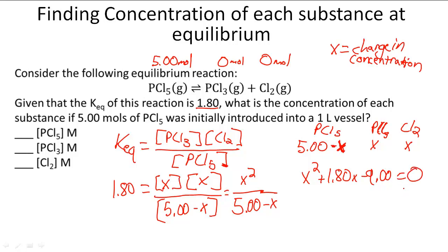We're going to solve this using the quadratic formula, and what we're going to get is two solutions: x is going to be negative 4.03 and then 2.23. We disregard the negative answer because we know that x is going to be a positive change for PCl3 and Cl2, because there were none of them before. So it's going to be 2.23.